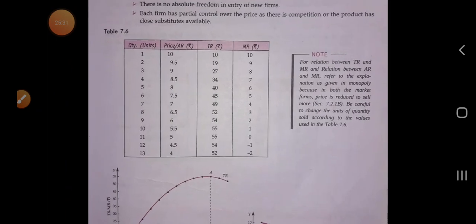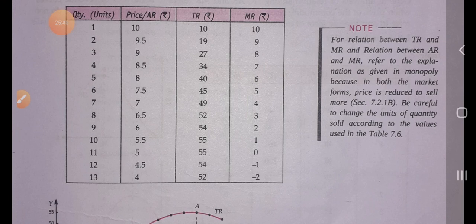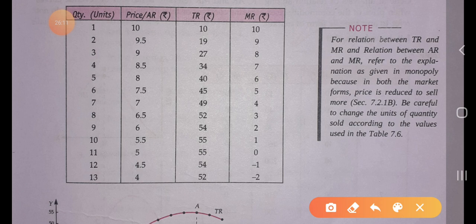The relation between TR, MR, and AR in monopolistic competition resembles that in monopoly, because in both market forms price is reduced to sell more. However, we must be careful: in monopoly there are no close substitutes, so prices differ significantly, whereas in monopolistic competition there are close substitutes and prices are very close to each other.